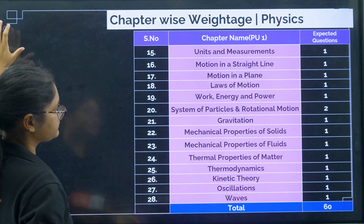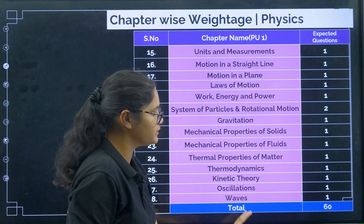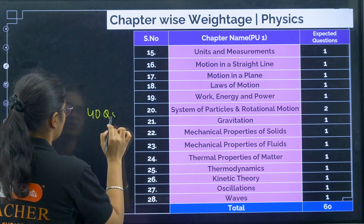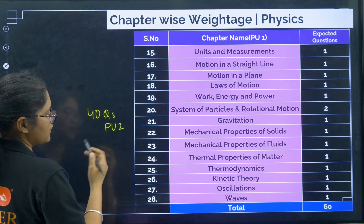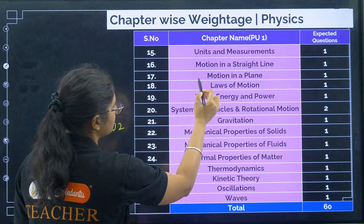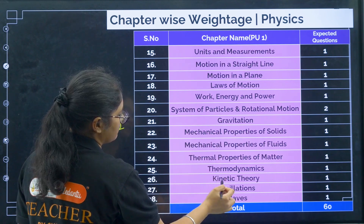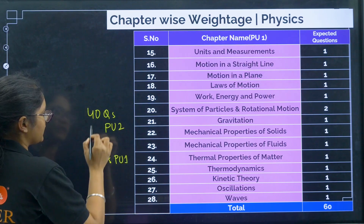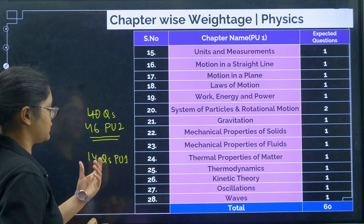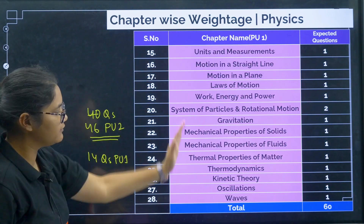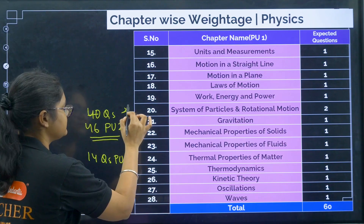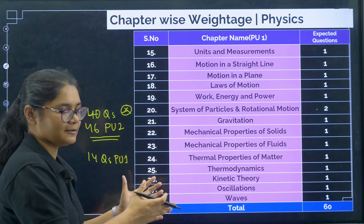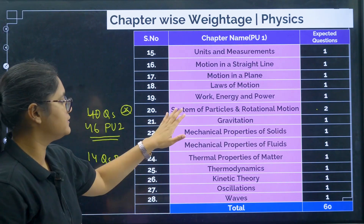For physics PU1, all chapters will have 1 question each. So if I count: 40 questions from PU2 and 14 questions from PU1. One especially important chapter is System of Particles and Rotational Motion, where you can expect 2 questions. So when you finish PU2 syllabus and move to PU1, try to complete this chapter first.